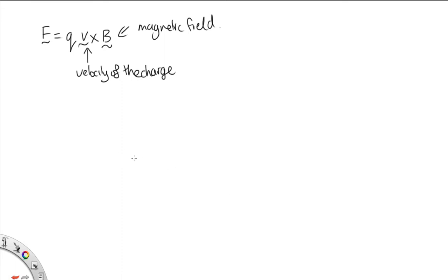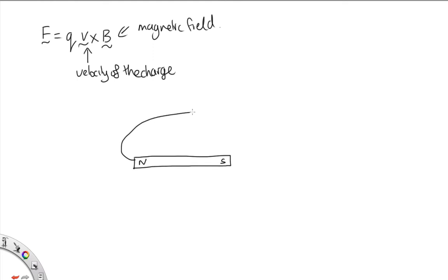Magnetic fields, like electric fields, are represented by field lines. When we're drawing magnetic field lines, we draw them coming out of the North Pole and into a South Pole.